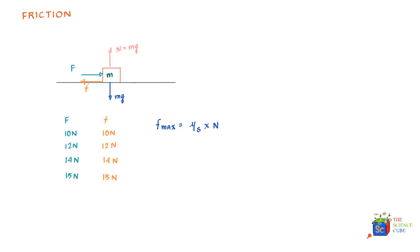Beyond this maximum, the box starts moving, and there is a different coefficient of friction called μk, the kinetic coefficient of friction — kinetic pertaining to movement, static pertaining to the mass being still. μk is always less than μs. Intuitively, the initial force required to push a table is more than the force required to keep it moving once it starts.